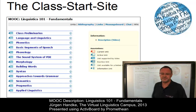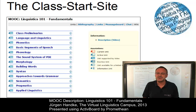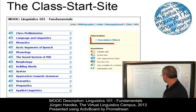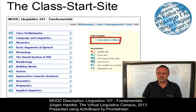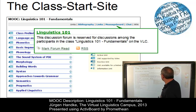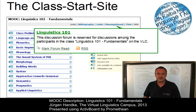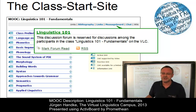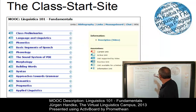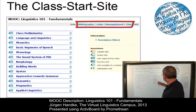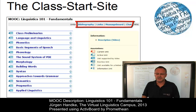Here it is. On the class start site, you have access to several class-related links — for example, to the class description video, this one I am now producing, or to the class-related message board, the forum for our class. Very important for a massive open online course where you can discuss problems with your classmates. Or to the class bibliography, a special link section and even a chat.